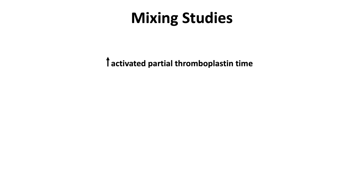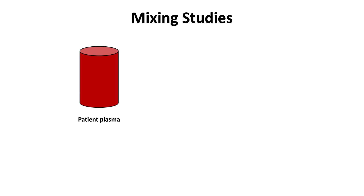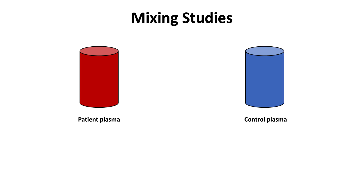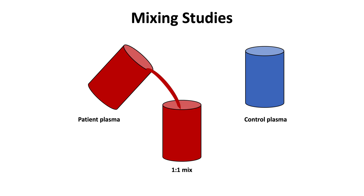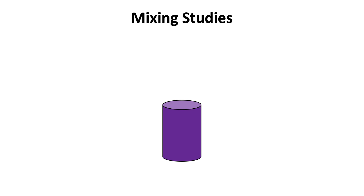Mixing studies are used to evaluate prolonged clotting times, including a prolonged activated partial thromboplastin time, prolonged prothrombin time, and a prolonged thrombin time, among others. A mixing study has two important components: the patient plasma and control plasma. The study involves a one-to-one mix of the patient plasma with control plasma to determine whether there is a coagulation factor deficiency or inhibitor.